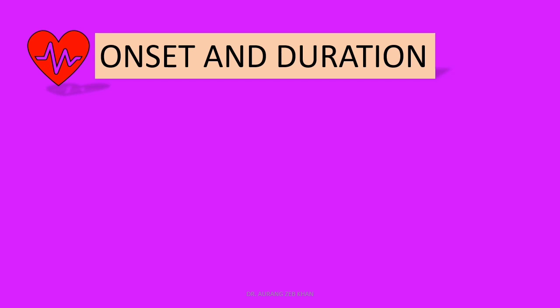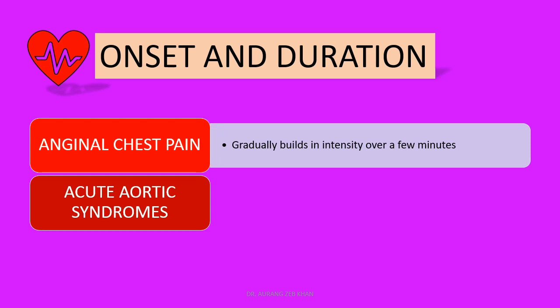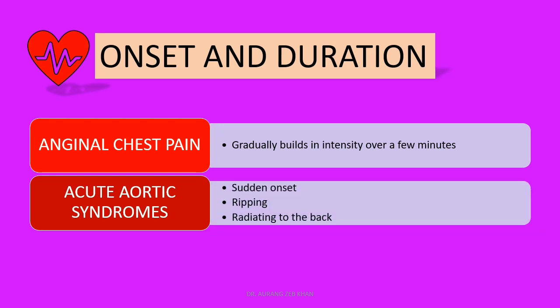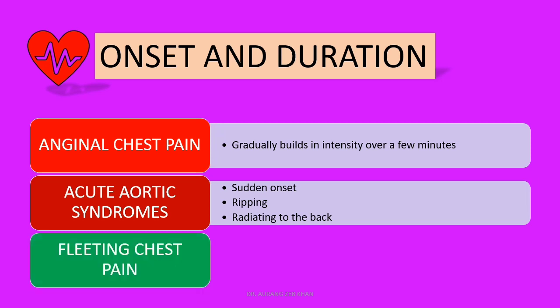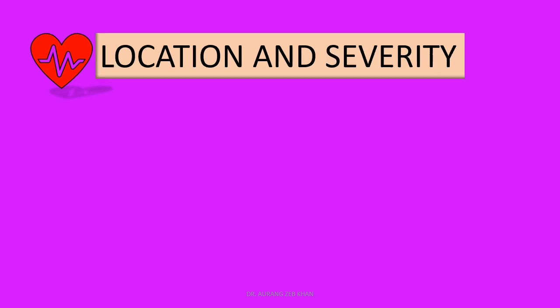The second characteristic of chest pain is the onset and duration. Anginal chest pain and other angina symptoms gradually build in intensity over a few minutes. On the other hand, if there is sudden onset of ripping chest pain with radiation to the upper or lower back, this is unlikely to be anginal and is suspicious of an acute aortic syndrome. Any patient who presents with sudden onset ripping chest pain radiating to the back, acute aortic syndrome should be suspected. Fleeting chest pain — a pain of few seconds duration — is unlikely related to ischemic heart disease.